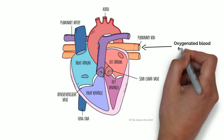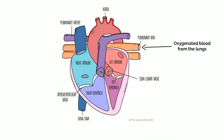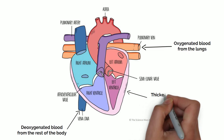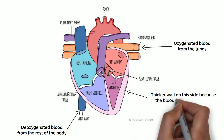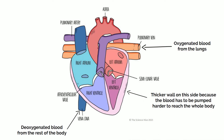Oxygenated blood is brought back from the lungs into the left side of the heart through the pulmonary vein, while deoxygenated blood from the rest of the body returns to the right side of the heart through the vena cava. The left side of the heart has a much thicker wall than the right side because the blood has to be pumped a much further distance around the body than to the lungs.